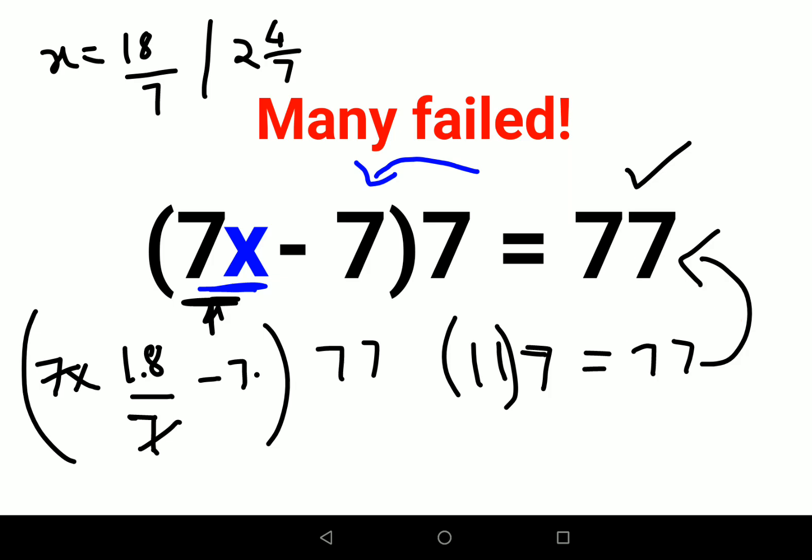I hope this is very clear. The value of x for this question is 18 upon 7, or 2 4/7. That's it for today. I'll see you in the next video.